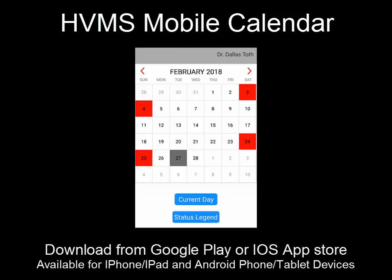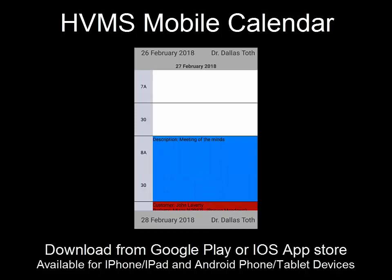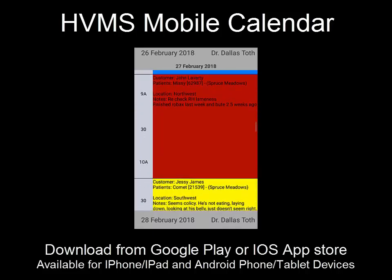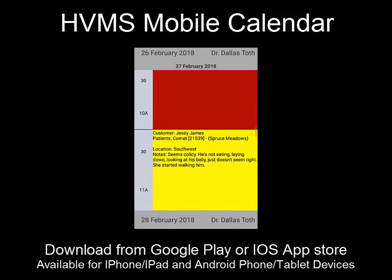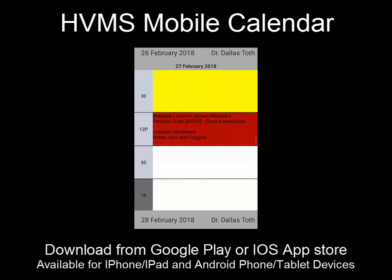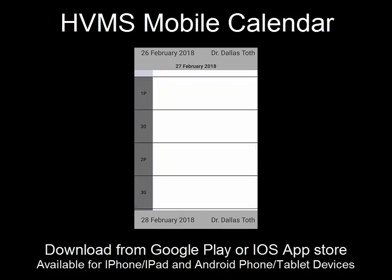Next, click the day that you want to see your appointments. After clicking the day, you'll be able to scroll through the day to see your appointments. You can see up at the top and bottom there's a day forward and a day back button for you to make a selection.